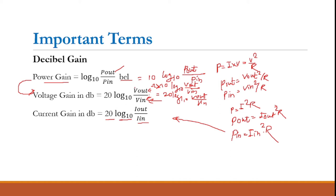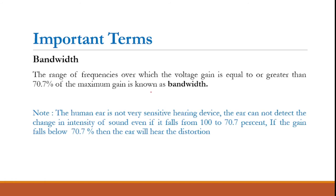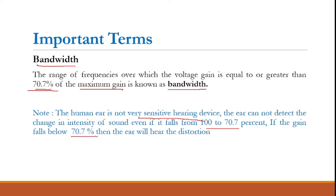The next parameter is bandwidth. Bandwidth is the range of frequencies over which the voltage gain is equal to or greater than 70.7% of the maximum gain. We use 70.7% because the human ear cannot detect a change in sound intensity between 100% and 70.7% — this is experimentally verified. If the gain falls below 70.7% of maximum, the human ear will hear distortion.